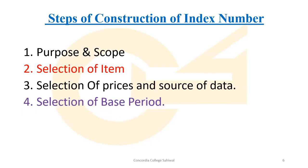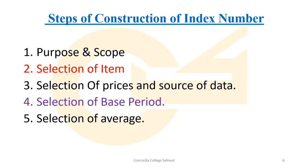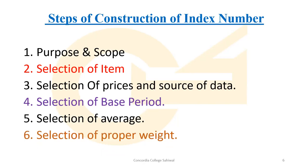The fourth step is the selection of base period — we decide whether it is a fixed base period or a chain base period. The fifth step is the selection of average — in index numbers, three types of averages are used: arithmetic mean, median, and geometric mean. We decide which average we are using. The last step is the selection of proper weight — we decide how much weight to assign to each item.